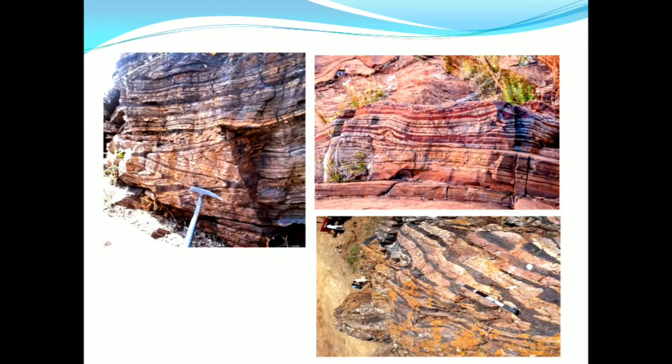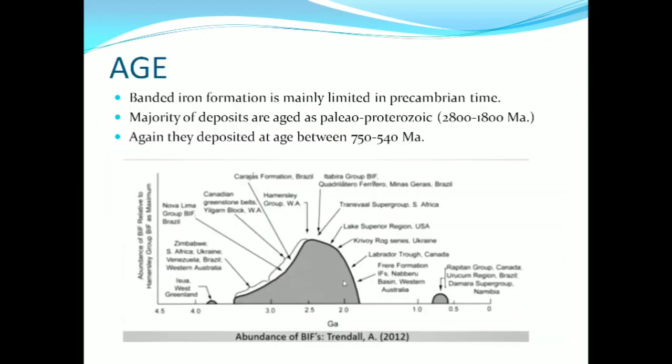The alumina percentage present in BIF is very negligible compared to the Phanerozoic iron deposits. Here are some pictures of BIF which show the alternate banding of iron oxide and silica. Banded iron formation is mainly limited to the Precambrian time. The majority of these deposits are aged as Paleoproterozoic, that is between 2.8 to 1.8 billion years, and they also deposited at an age between 750 to 540 million years.